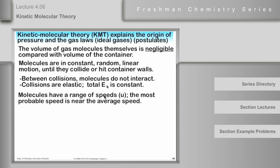One thing that's not obvious and that needs our attention is that these molecules, even though they have a certain average kinetic energy, have a range of speeds. Usually, when authors talk about the kinetic molecular theory, they use the symbol U for speed rather than V. Your textbook uses U, so I've tried to move along with it here. Even though they have a range of speeds, some proportion of molecules are going relatively slowly, some are going much more rapidly, and there is some average speed — called the most probable speed — where most of the molecules are going, and we're going to assume that equals the average speed.